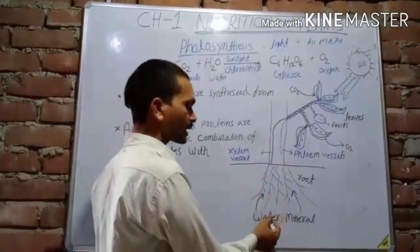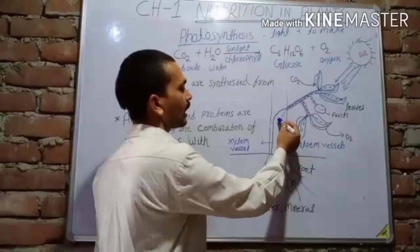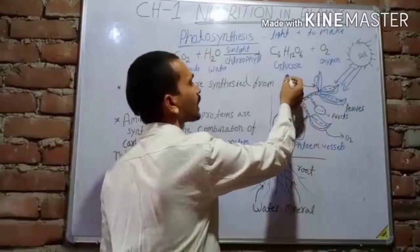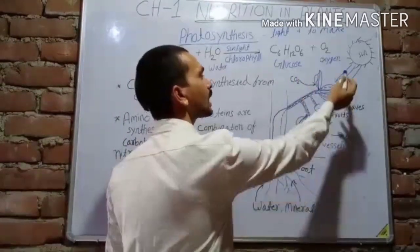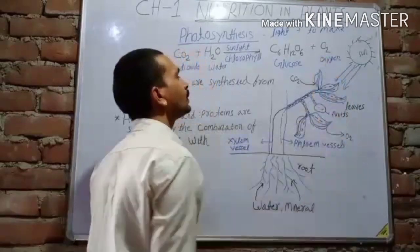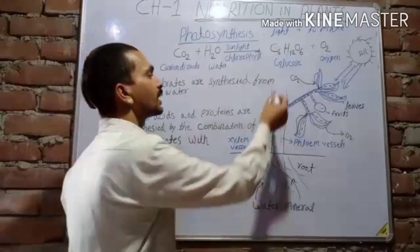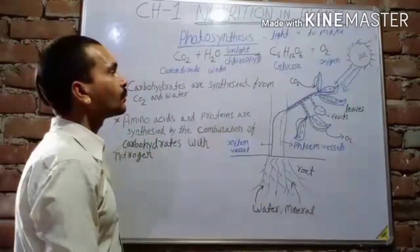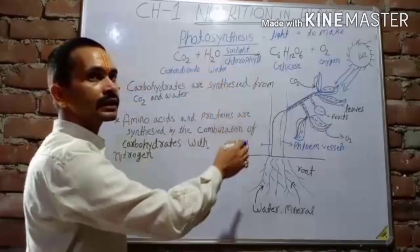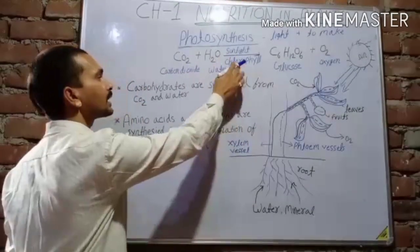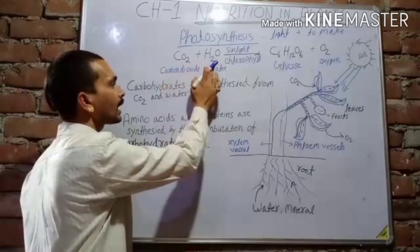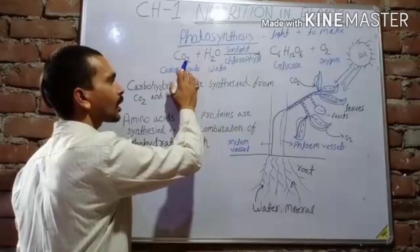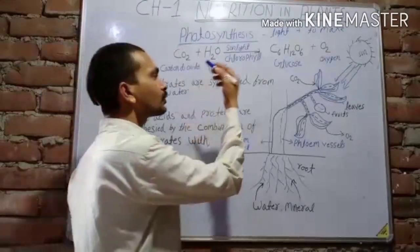When plants take water and minerals from the soil, it reaches to the leaves. Carbon dioxide is also absorbed by the leaves and sunlight is also absorbed by the leaves. When sunlight is absorbed by the leaves, it is converted into chemical energy. This chemical energy then reacts with carbon dioxide and water.